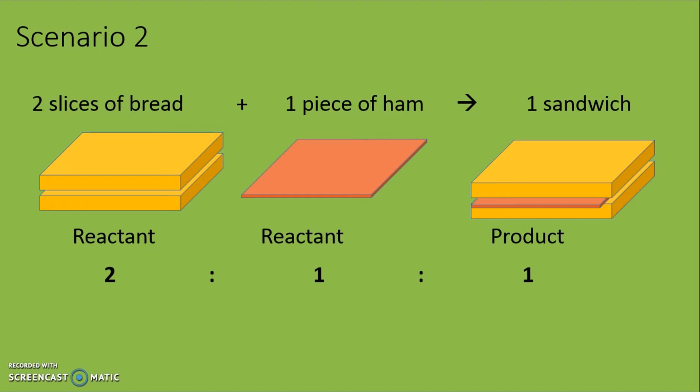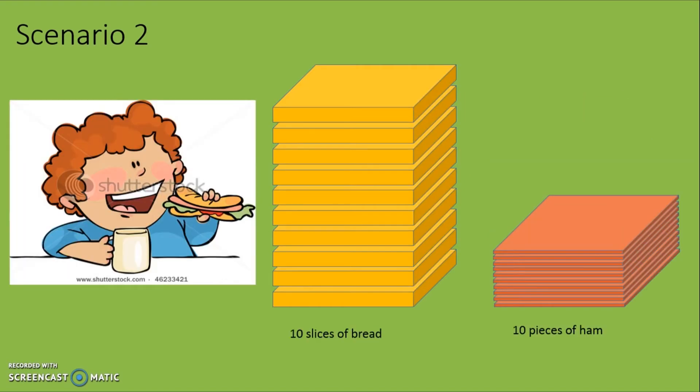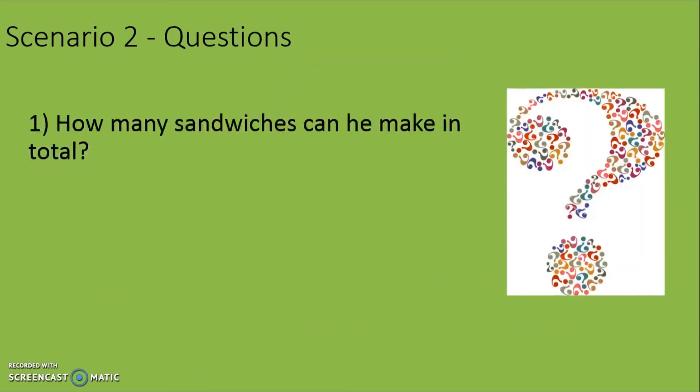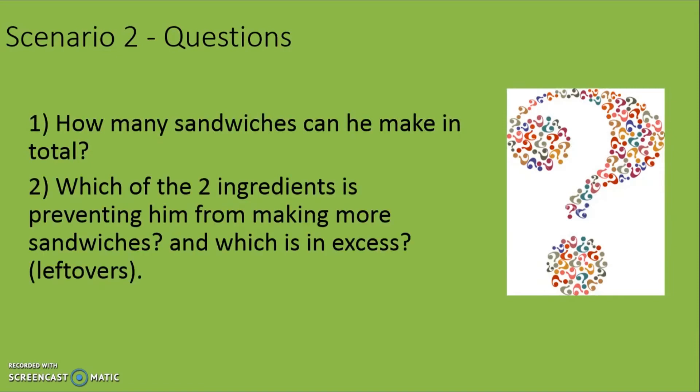As he looked through the kitchen, he realized that he only had 10 pieces of bread and 10 pieces of ham. So with this number of ham and bread, let's take some time to think about these two things. How many sandwiches can he make in total? Which of these two ingredients is preventing him from making more sandwiches and which is in excess?